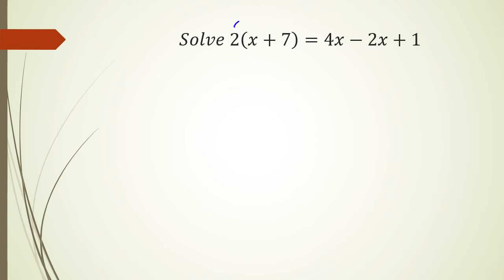Let's start expanding it and simplifying and see what happens. So we've got 2 times x, that's 2x, 2 times 7, that's 14. And on the other side, I have 4x minus 2x plus 1. Simplifying this, I have 2x plus 14 equals 2x plus 1.